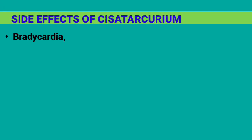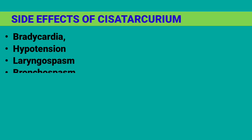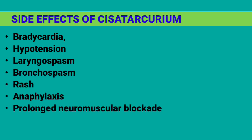Side effects of Cisatricurium: Bradycardia, Hypotension, Laryngospasm, Bronchospasm, Rash, Anaphylaxis, Prolonged neuromuscular blockade, and Myopathy.